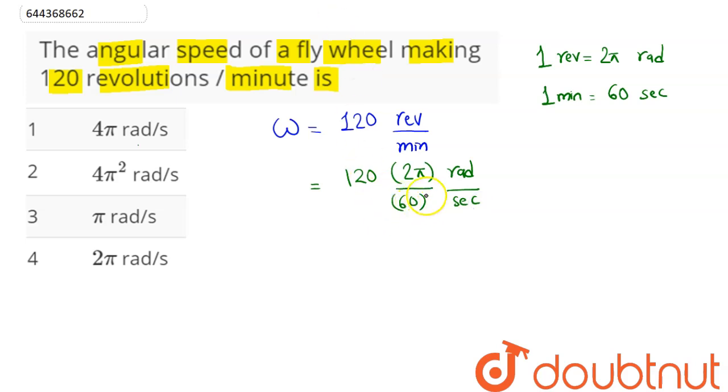So on simplification, 60 cancels this 120 by 2, so this comes as 2 times 2π. Here we have 4π radian per second. So 4π radian per second means this